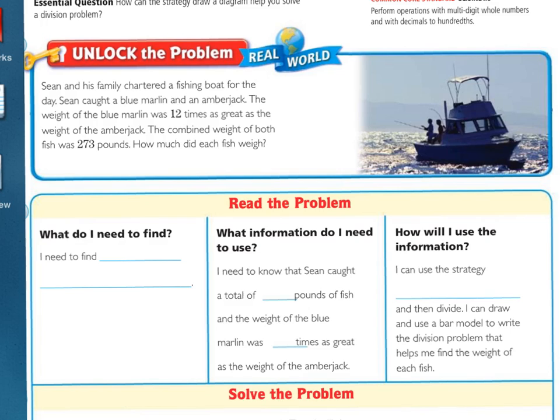Unlock the Problem. Sean and his family chartered a fishing boat for the day. Sean caught a blue marlin and an amberjack. The weight of the blue marlin was 12 times as great as the weight of the amberjack. The combined weight of both fish was 273 pounds. How much did each fish weigh?